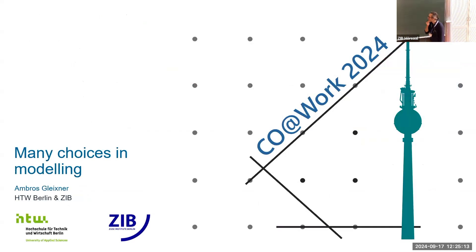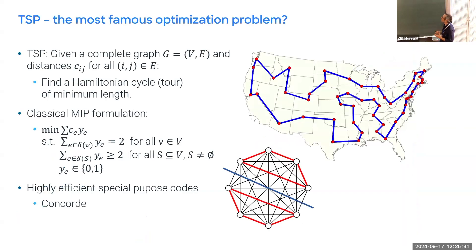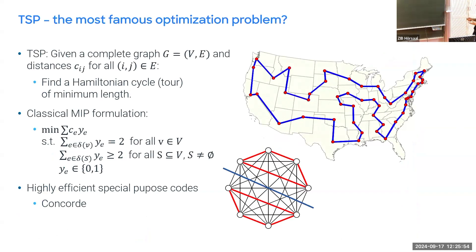There are many more versions of Sudokus and you could model them similarly. Now a different example illustrating the many choices in modeling: the traveling salesperson problem. Given a complete graph, you want to find a Hamiltonian cycle covering each node exactly once with minimum length. There's a classic MIP formulation — also the basis of the most efficient code, Concorde — using a binary variable for each edge indicating whether it is used.